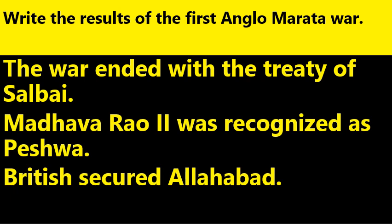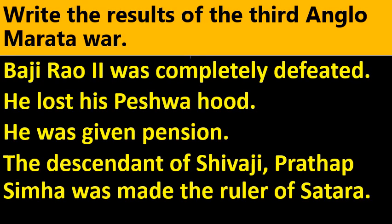Write the results of the First Anglo-Maratha War. The Maratha War ended with the Treaty of Salbai. Madhava Rao II was recognised as Peshwa. British secured Allahabad. Peshwa Baji Rao was given pension. The descendant of Shivaji, Pratap Simha, was made the ruler of Satara.